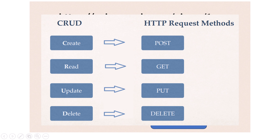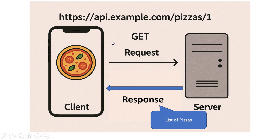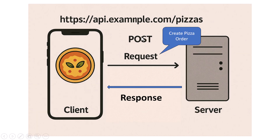The first is GET, which means retrieve some data. For example, if you want to see the list of available pizzas, the app sends a GET request to the server, and the server processes that request and sends all the data back to the client.